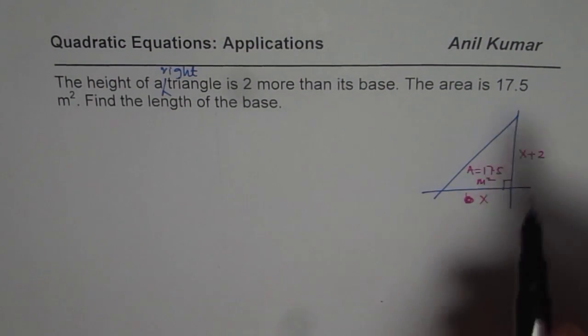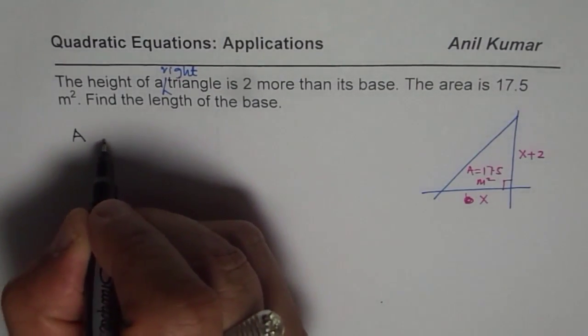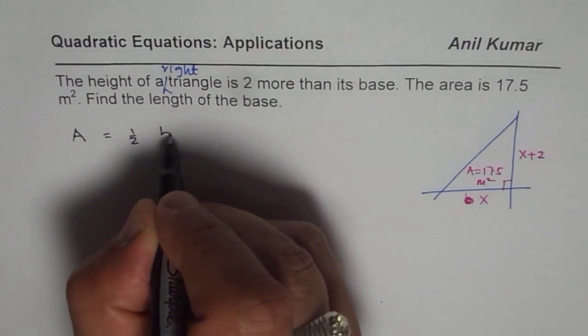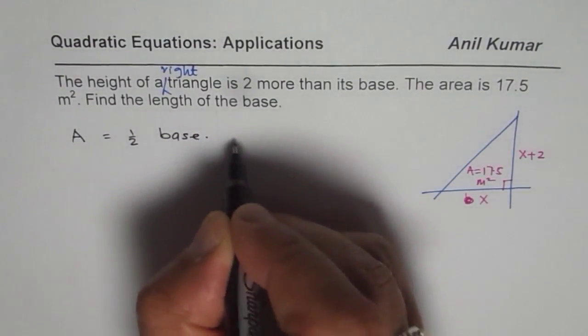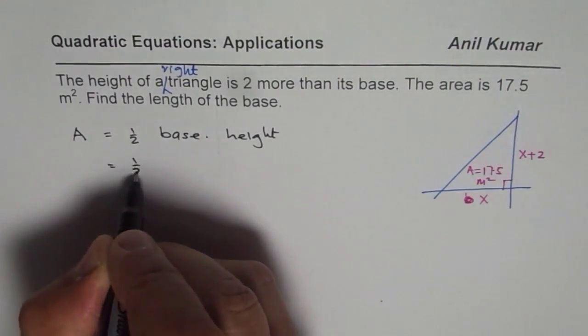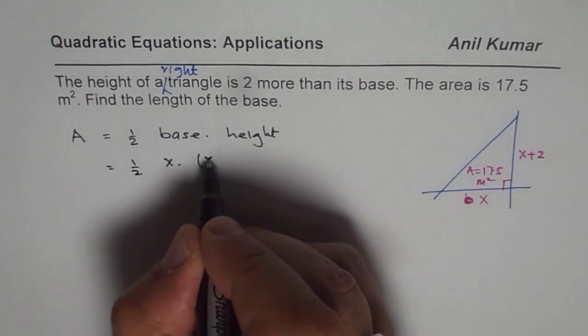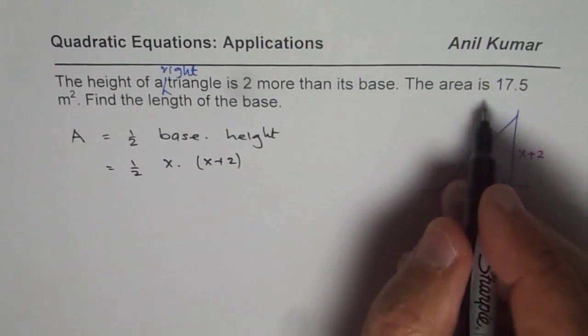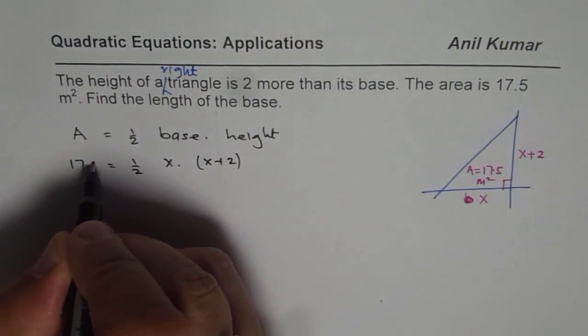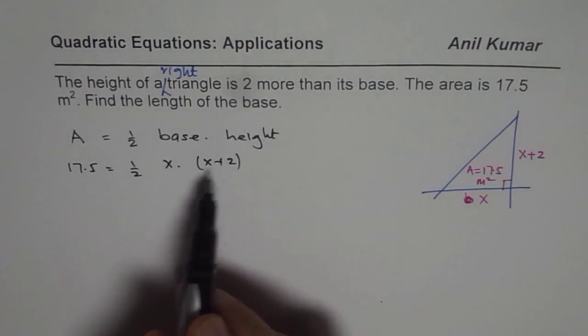We can relate height and base with the area. Area of a triangle is half base times height. In this case, base is x and height is x plus 2. Area is given as 17.5, so we can find x.